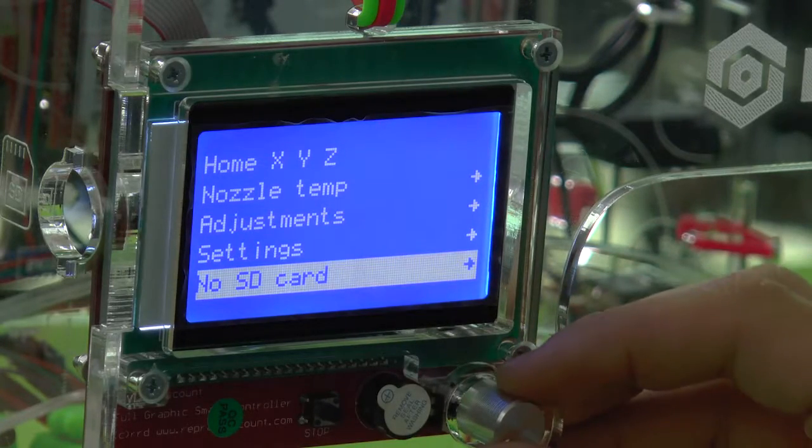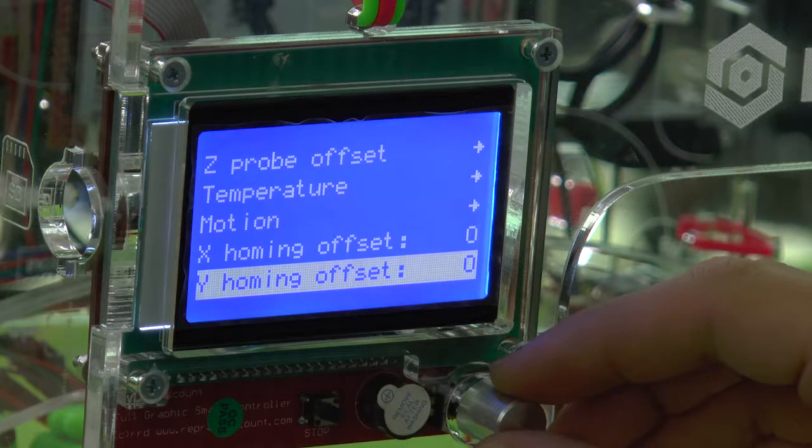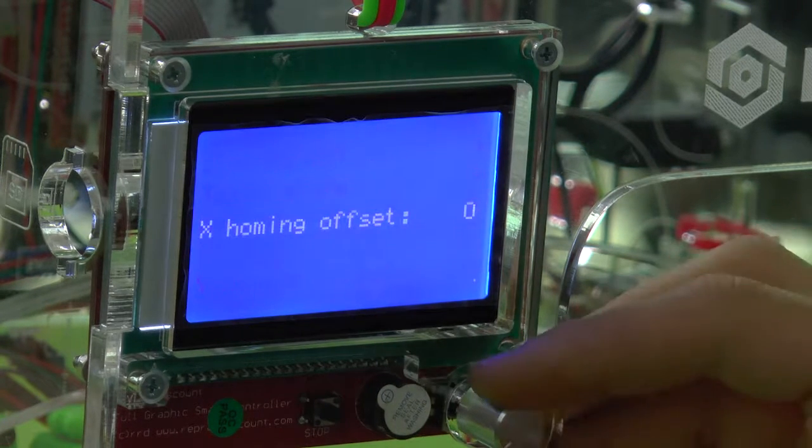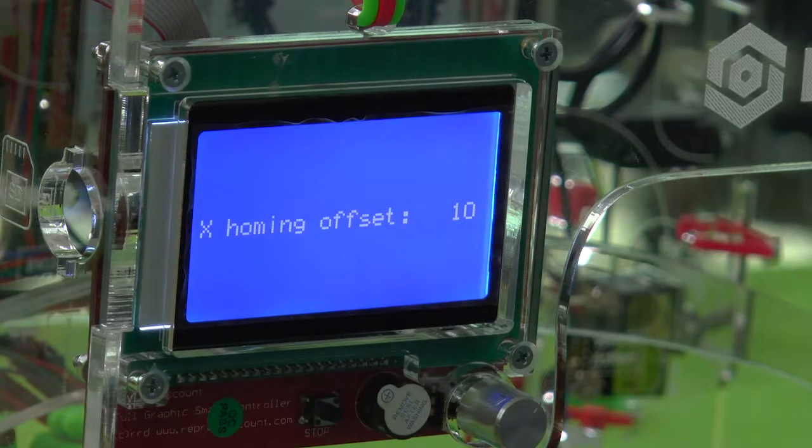And for us, go to settings, scroll all the way down and there is X and Y homing offsets. Set X to 10, 10 millimeters. That's it.